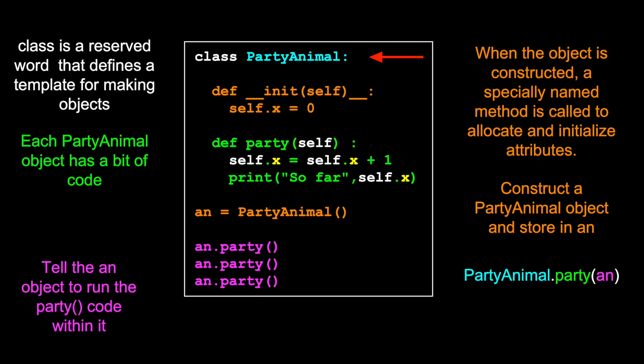Inside the class there are generally two things. There is some data and this just looks like an assignment statement in the class. X equals zero. And then there is a def. This looks just like a function and then it starts with a def, has a colon, indents. So that function finishes right there.